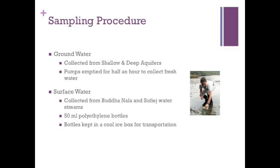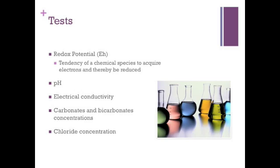Before sampling, the water was drawn for half an hour to empty the hand pump and two well pipes to collect fresh water from the shallow and deep aquifers. For surface water, samples were collected from the center of the Budhanala and Sutledge water streams. Polyurethane bottles of 50 milliliter volumes were used for collection of water samples, and the bottles were kept in a cool ice box for transportation. Initial testing included redox potential, pH, electrical conductivity, carbonates and bicarbonate concentrations, and chloride concentrations.